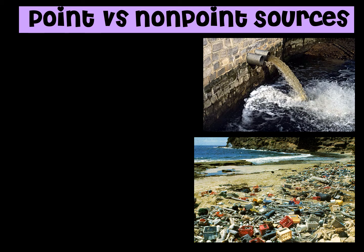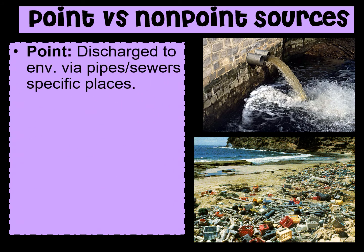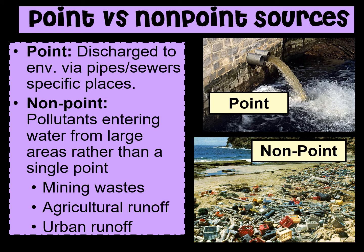There are two general categories for water pollutants: point sources and non-point sources. Point sources — can you point to where that water pollution is coming from? If you can, that is usually a point source. Pipes and sewers that dump directly into specific places would all be point sources. Non-point sources could be coming from a variety of areas; you can't really tell where it's coming from — it comes from a larger area rather than a single point. Non-point sources would include things like mining waste, urban litter runoff, or agricultural runoff from farms.